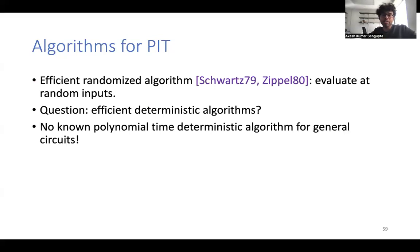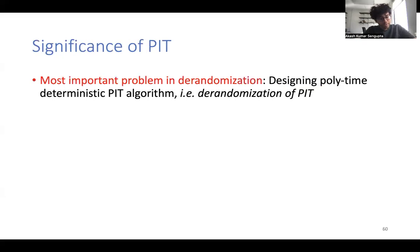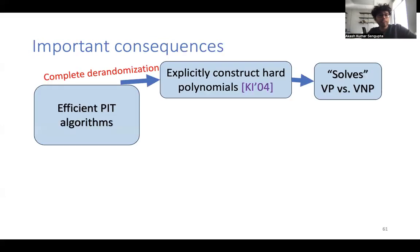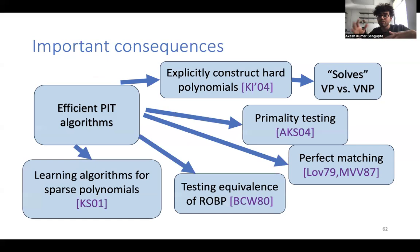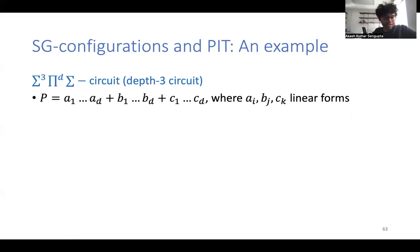There are efficient randomized PIT algorithms — we can evaluate at random inputs — but the question is whether there exist efficient deterministic algorithms. No polynomial-time deterministic algorithm is known for general circuits. This problem is very central to algebraic complexity theory: a complete de-randomization of PIT would, by work of Kabanets and Impagliazzo, let us explicitly construct hard polynomials, almost solving VP versus VNP, the algebraic analog of P versus NP.